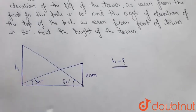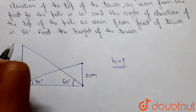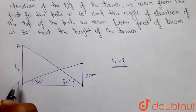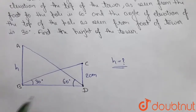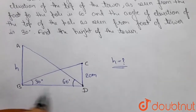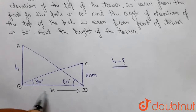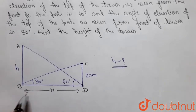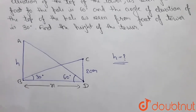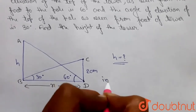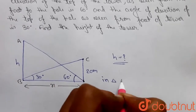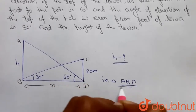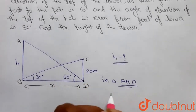Let me name these points: let this be A, B and this be C, D. Let the distance BD be equal to x.